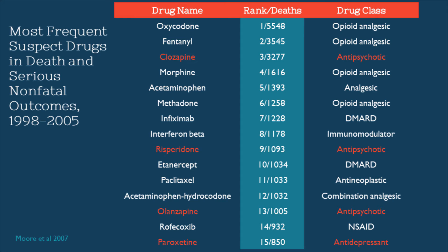This chart identifies three antipsychotics and one antidepressant drug as linked to over 6,000 deaths in a seven-year period in reports filed by practitioners with the FDA. Much more research is needed to examine the relations between psychiatric drugs and mortality.